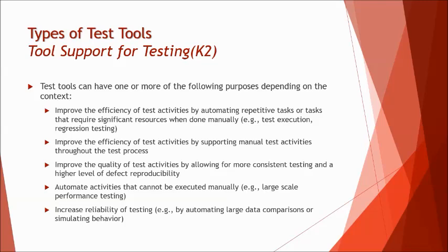When one user's perception differs from another's, each person may interpret requirements differently and arrive at different outcomes. But tools are more consistent compared to human beings, which is why we have tool support for consistency. We also talk about automated activities that cannot be executed manually — for example, performance testing. Manually, we can test for five to ten users, which is within budget and practically executable and can give some real-time statistics.